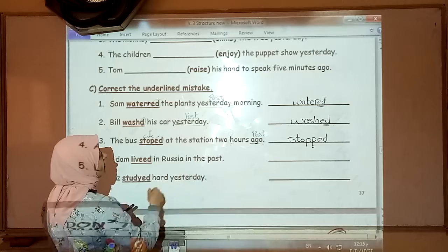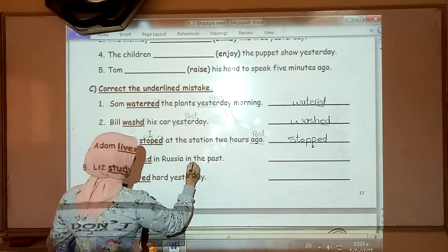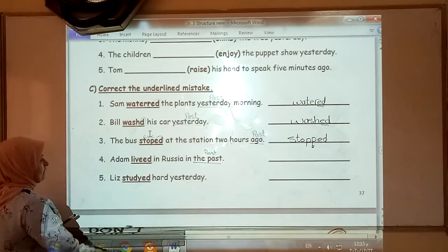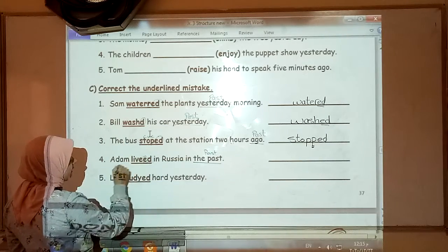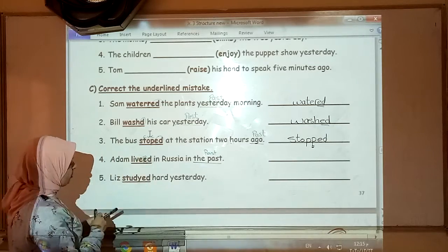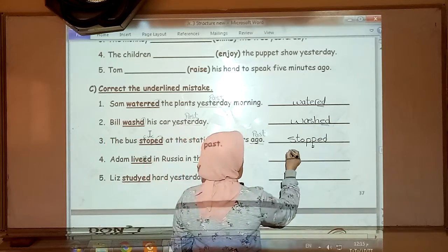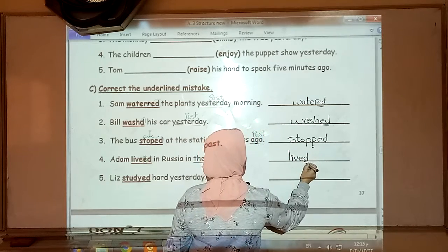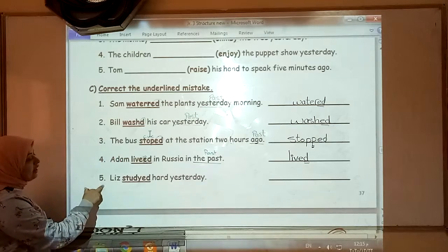Next, Adam lived in Russia in the past. Keyword, in the past. Lived, as you can see we have double D which is wrong because if the verb ends in E we add D only. Lived.